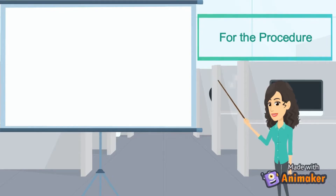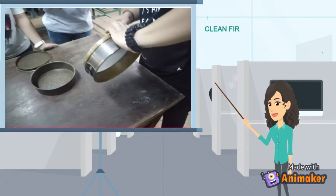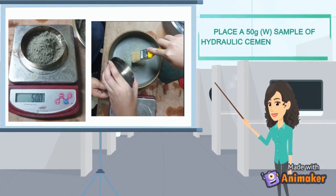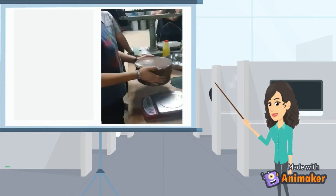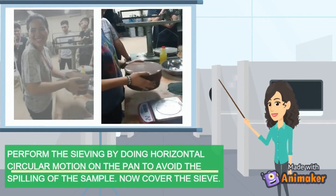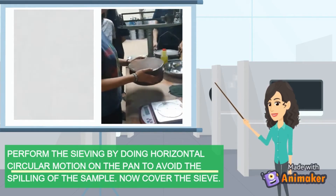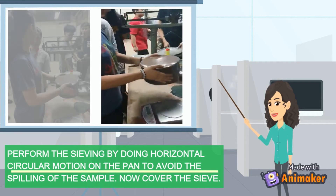For the procedure: first, clean the 0.075 mm sieve using the bristle brush, then attach the sieve to the pan. Place a 50 gram sample of hydraulic cement on the sieve. Perform the sieving by doing horizontal circular motion on the pan to avoid spilling of the sample.